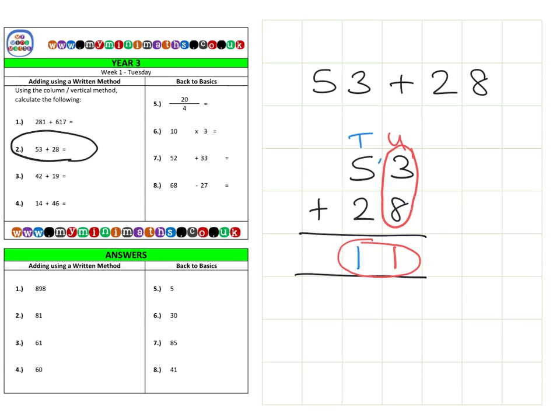Then when we look at the tens, we have fifty plus twenty, which is seventy. And then what we can do is we can add these all together. So one and zero is one ten, add seventy is eighty, for a final answer of eighty-one.